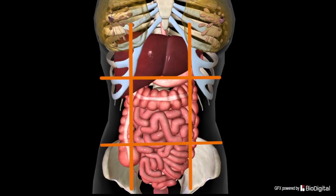Let's name these nine regions. In the centre, from top to bottom, are the epigastrium, then the umbilical region, and finally the hypogastric or suprapubic region. So that's the three regions in the middle from top to bottom.